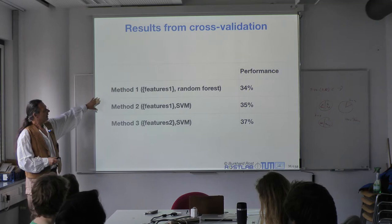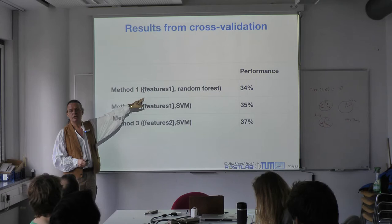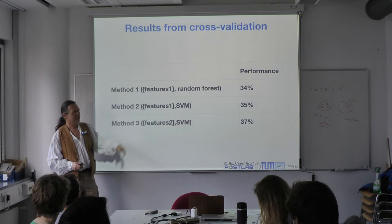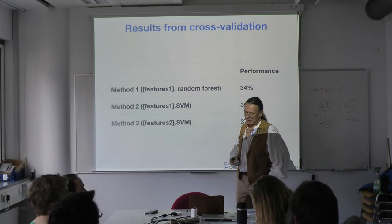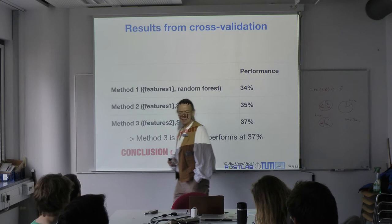We have three different methods here. Two have the same features but different machine learning devices. The third uses a different feature set but the same SVM as the second. Those are the performance values. The first statement would be: method 3 is best and performs at 37% accuracy. Is that conclusion correct?